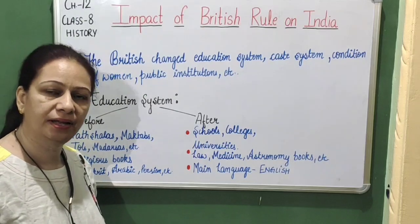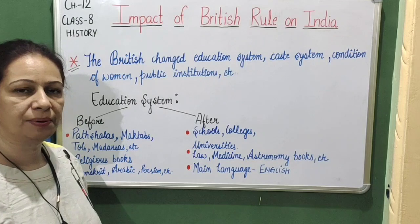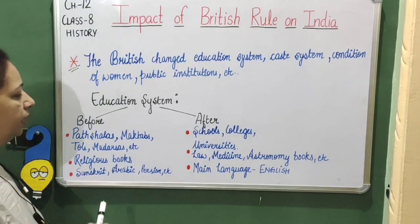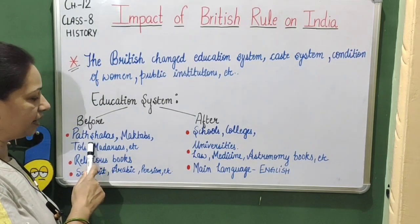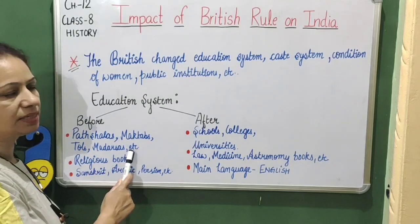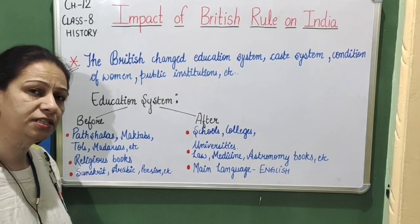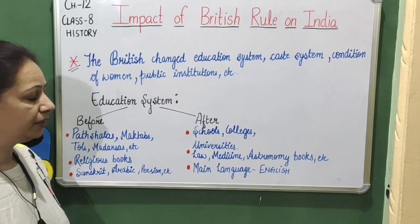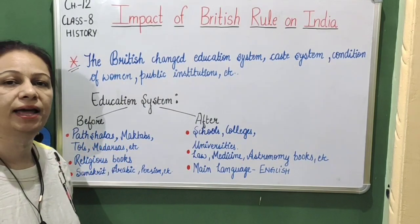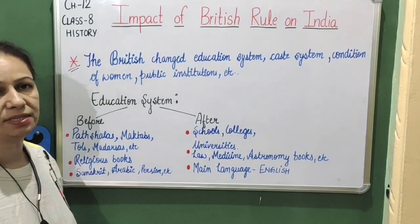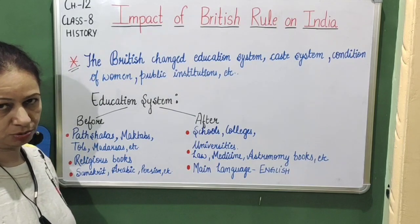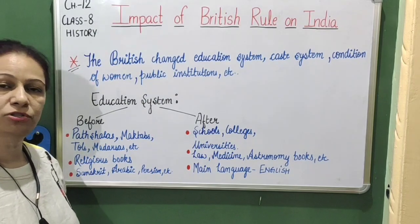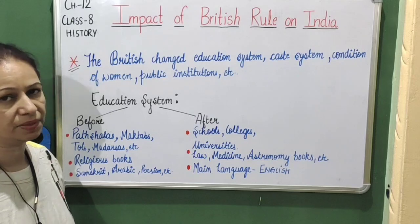Now we will study this chapter starting with the education system. Before the British rule, education was limited to patshalas, maktabs, tolls, madarsahs, etc. The education system was limited to elementary education for students. Mainly, education was limited only to the reading of religious books.